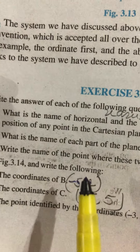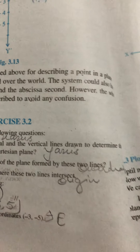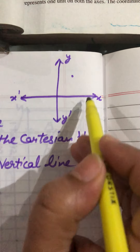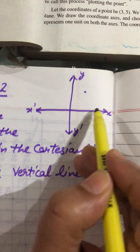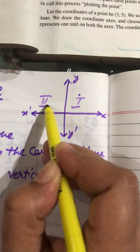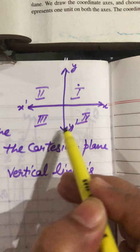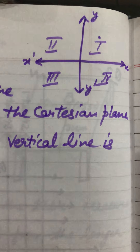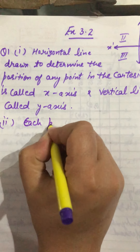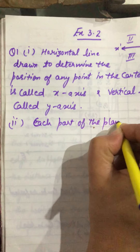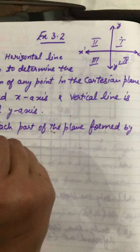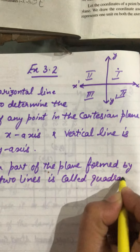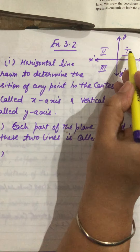Next question: what is the name of each part of the plane formed by these two lines? We have the x-axis and the y-axis. These two coordinate axes divide the plane into four parts — first, second, third, and fourth — and each part is called a quadrant. A quadrant is one fourth of the whole, so each part is called one quadrant. So there are four parts and each part is called a quadrant.